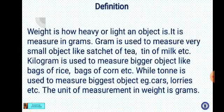Now, weight means how heavy or light an object is. It is measured in grams. A gram is used to measure very small objects like a sachet of tea or a tin of milk. Kilograms are used to measure bigger objects like a bag of rice or bags of corn.